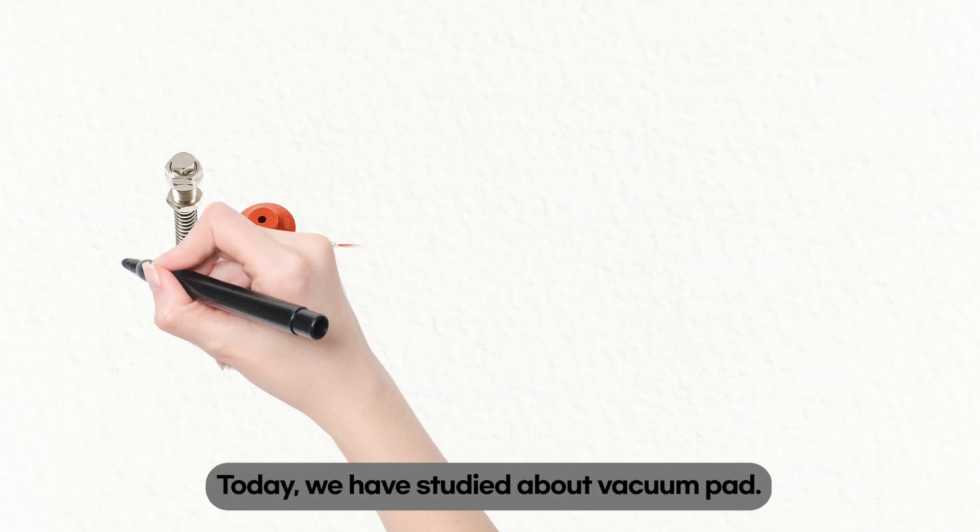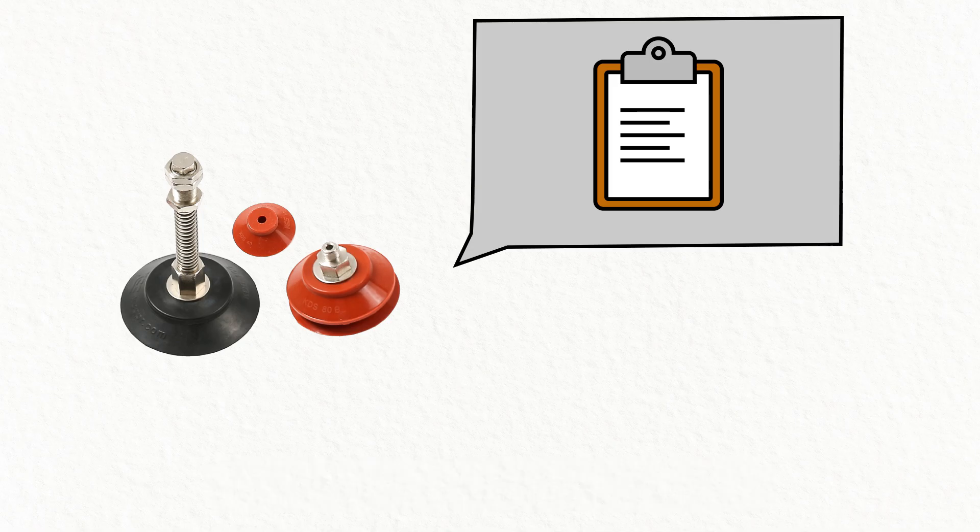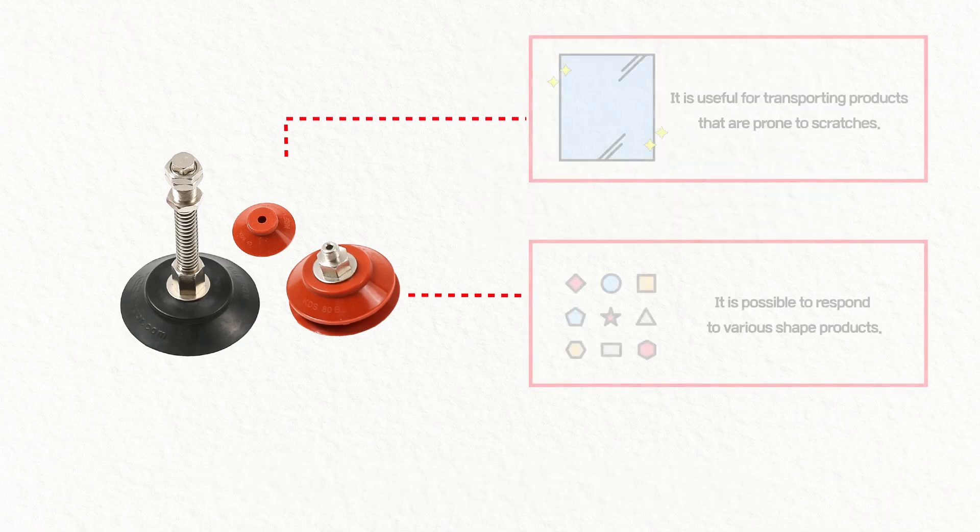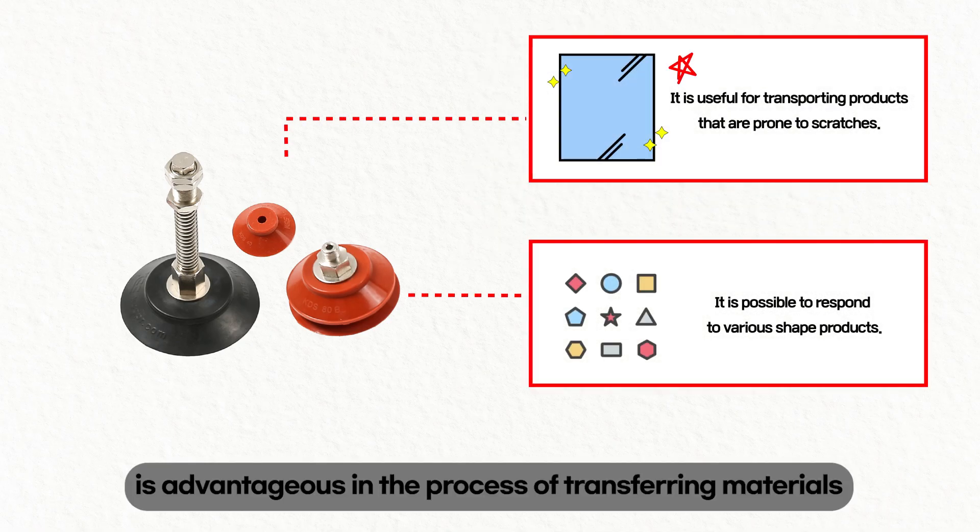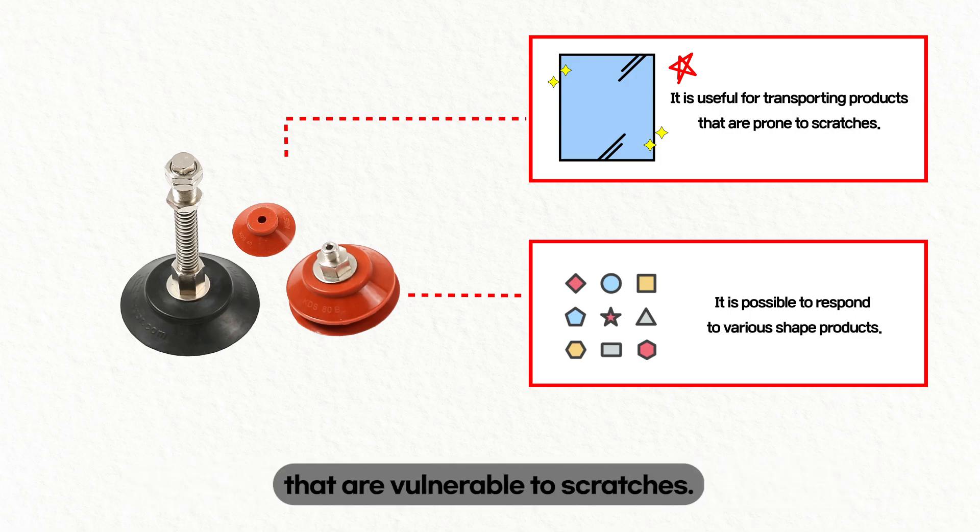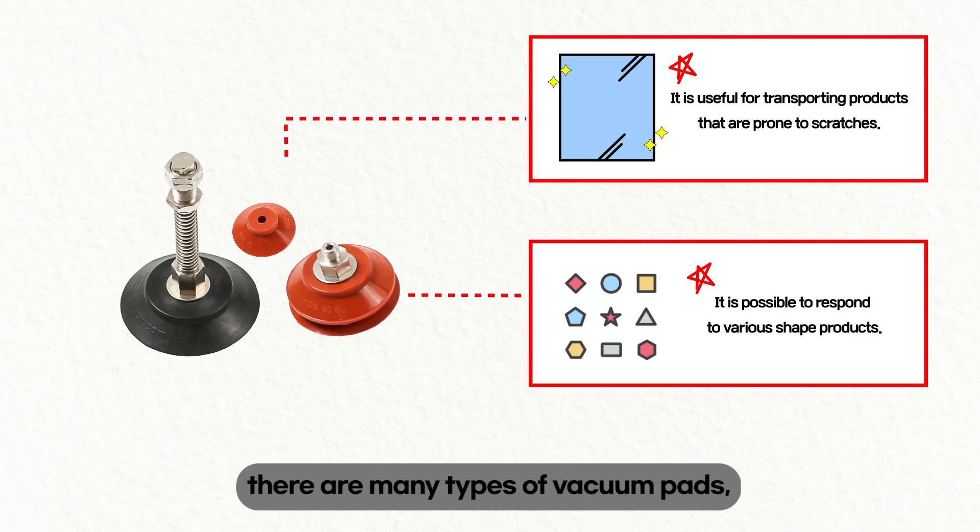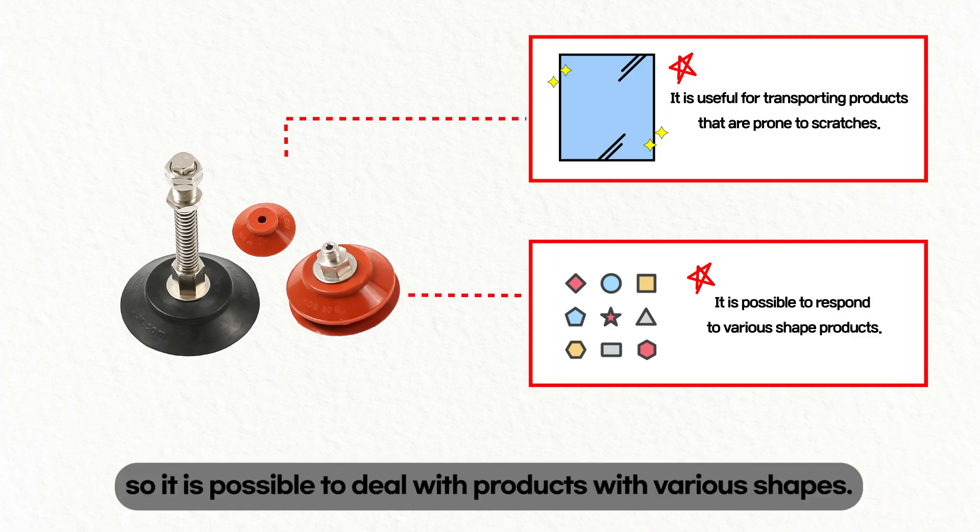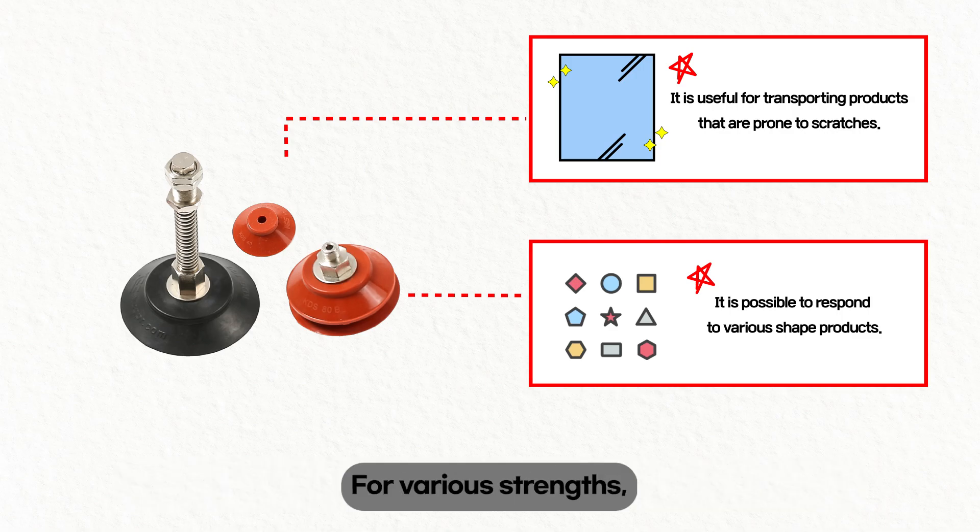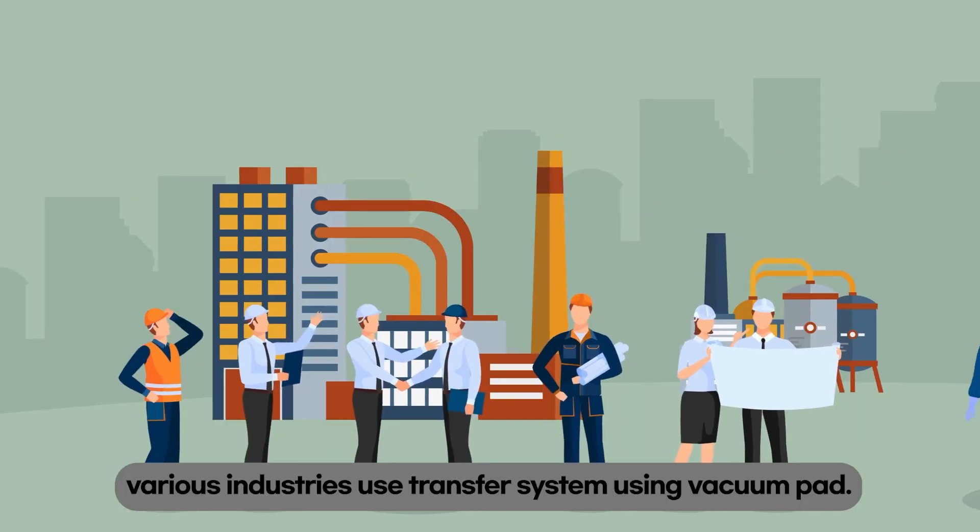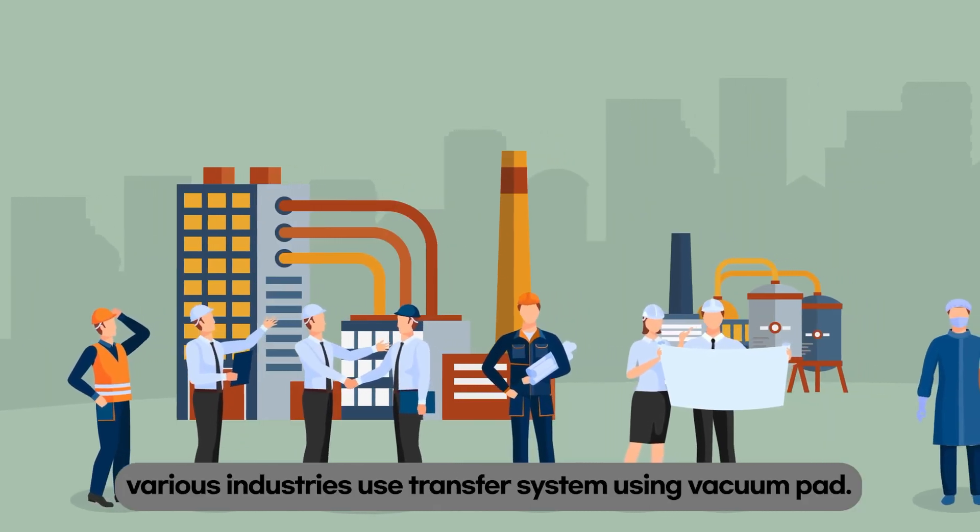Today, we have studied about vacuum pads. The transfer of products using vacuum pads is advantageous in the process of transferring materials that are vulnerable to scratches. As I said before, there are many types of vacuum pads, so it is possible to deal with products with various shapes and various strengths. Various industries use transfer systems using vacuum pads.